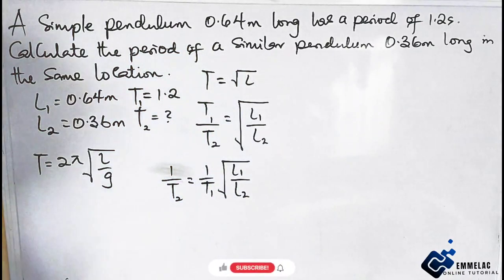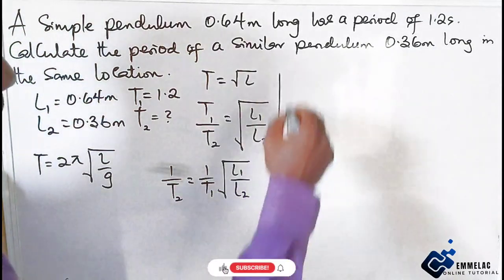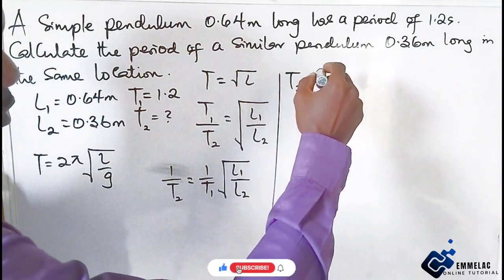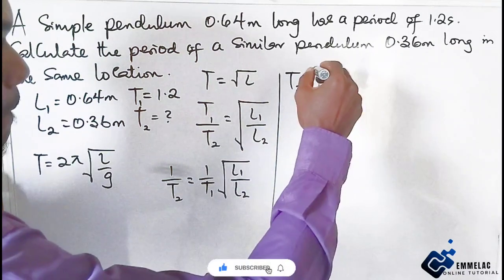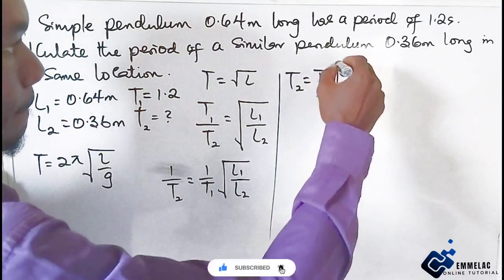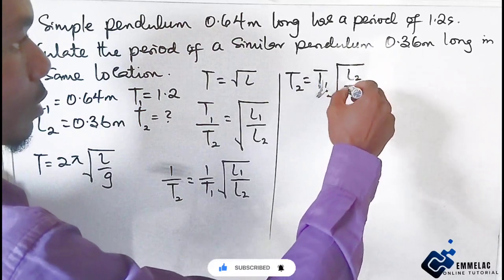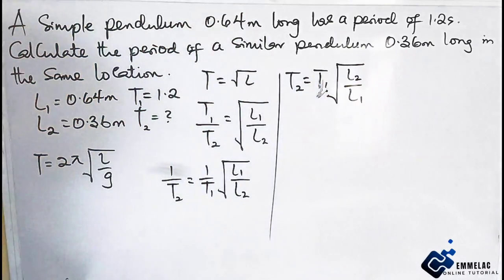So at the end of the day, we can see that T2 equals T1 times the square root of L2 over L1.